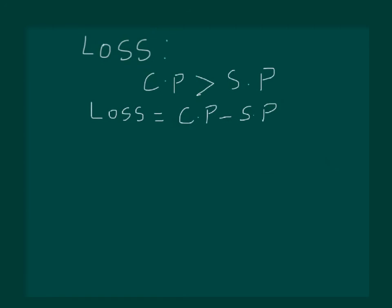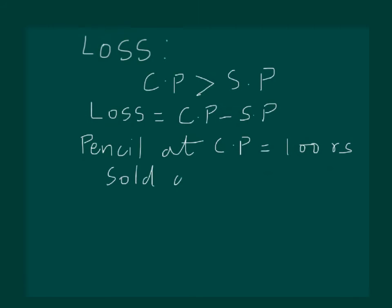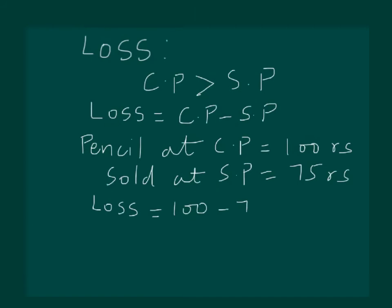Let us try and understand with an example. Consider the same pencil example. We had purchased the pencil at a cost price of 100 rupees, but we sold it at a selling price of 75 rupees. It's very clear that we had made a loss. Substituting values in our loss formula: 100 minus 75 equals 25 rupees. So we have clearly made a loss of 25 rupees.